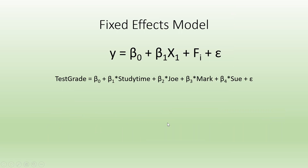This time, I want to include the time effect models. You can see here: Y is equal to beta_0 plus beta_1 * X1 plus phi_i plus epsilon. So the test grade is equal to beta_0 plus beta_1 * study_time plus beta_2 * Joe plus beta_3 * Mark plus beta_4 * Sue. I have included the cross-section effect — it can represent companies or firms whose effect is to be considered.